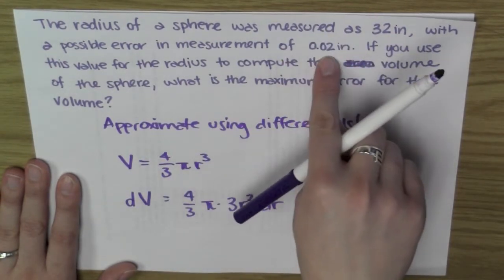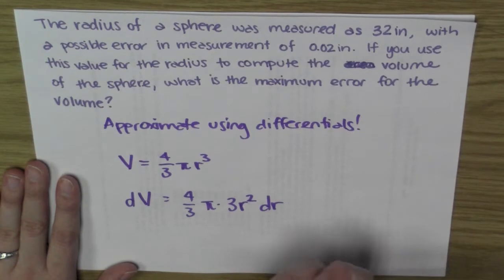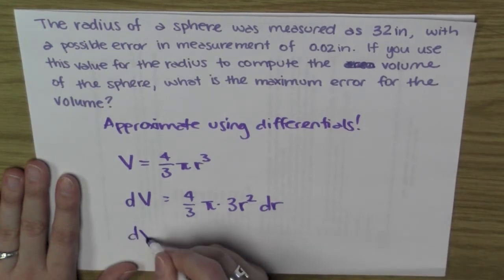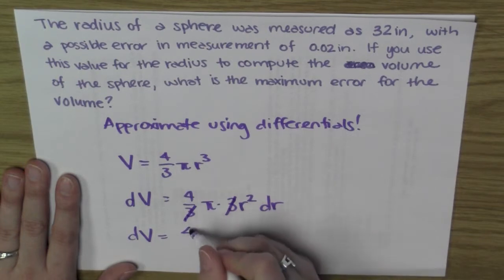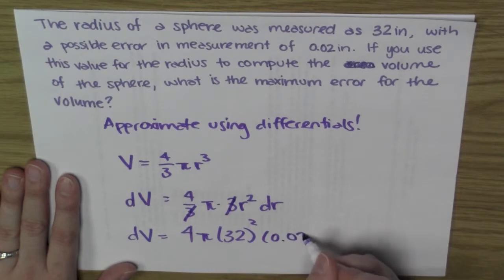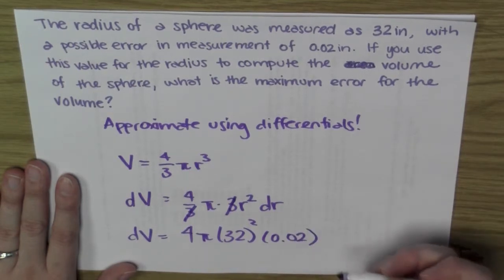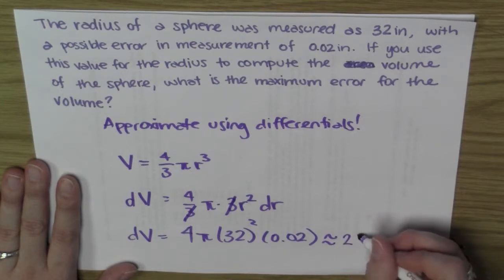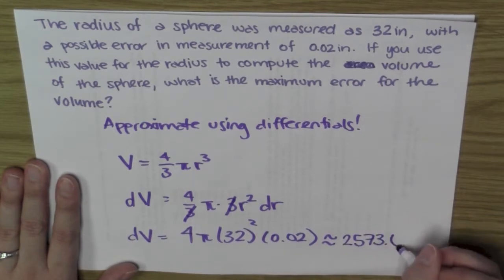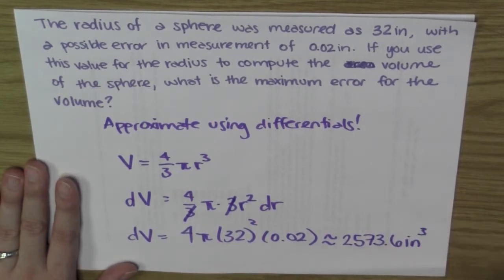So in this case, I get that dV is equal to, this 3 and this 3 can cancel, 4 times pi times 32 squared times 0.02. And if I put this in the calculator, I get that this dV is approximately 2,573.6 cubic inches.